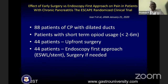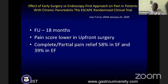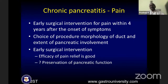The ESCAP trial — a randomized clinical trial — studied 88 patients with dilated ducts who had short-term opioid usage. 44% received upfront surgery and 44% received an endoscopy-first approach, with endoscopy failures going to surgery. The follow-up was two years. Pain scores were lower in the upfront surgery group, and complete or partial pain relief was achieved in 58% with upfront surgery versus 39% with endoscopic-first approach. Early surgical intervention for pain within four years after onset of symptoms produces good results. The choice of procedure should be dictated by duct morphology and extent of pancreatic involvement, and early surgery probably preserves pancreatic function.